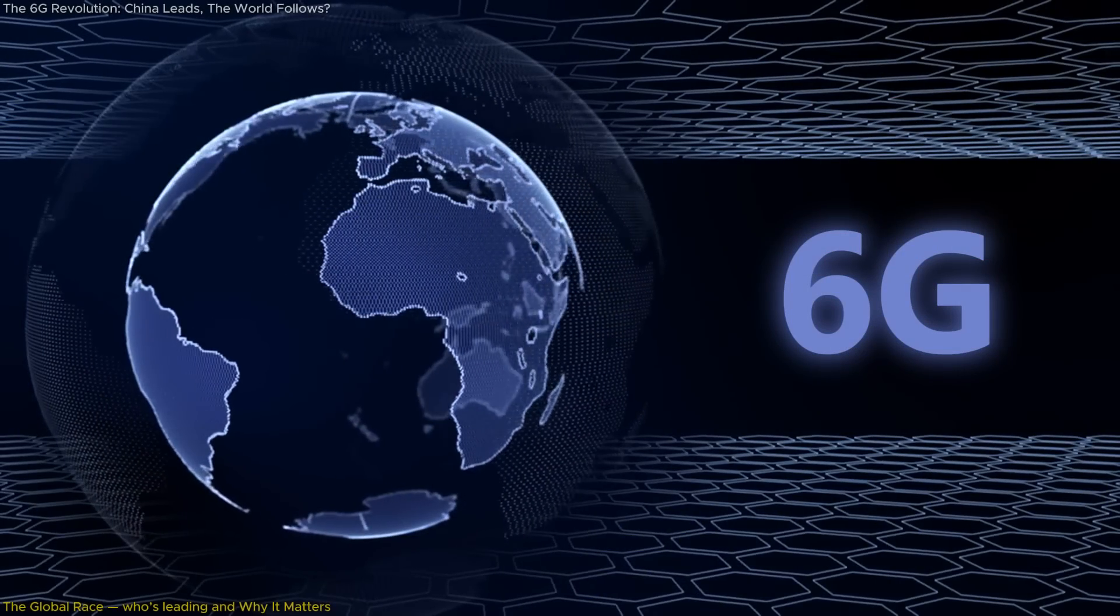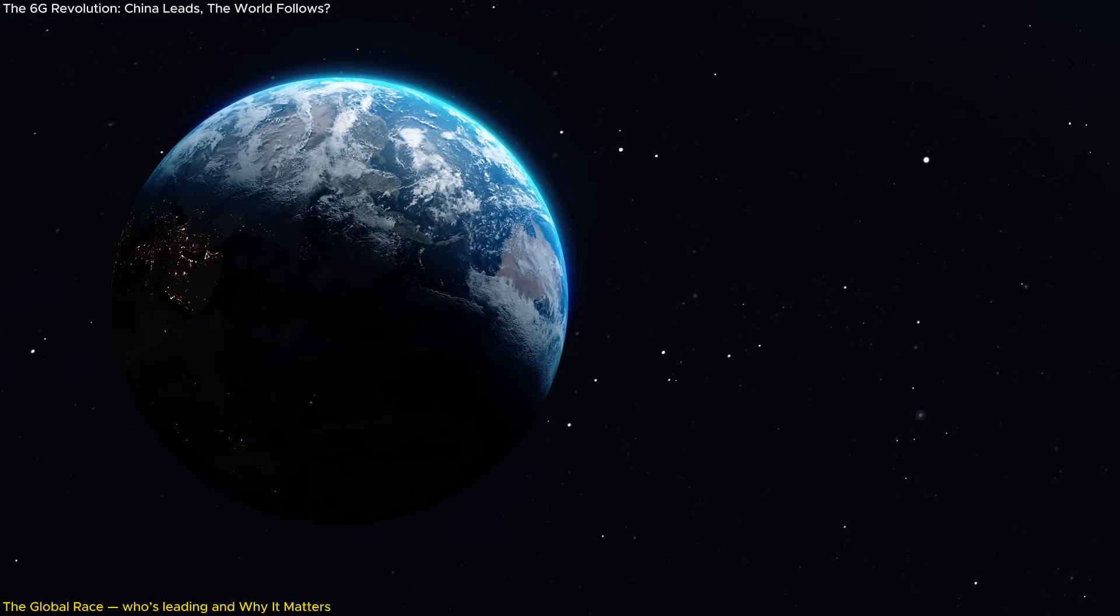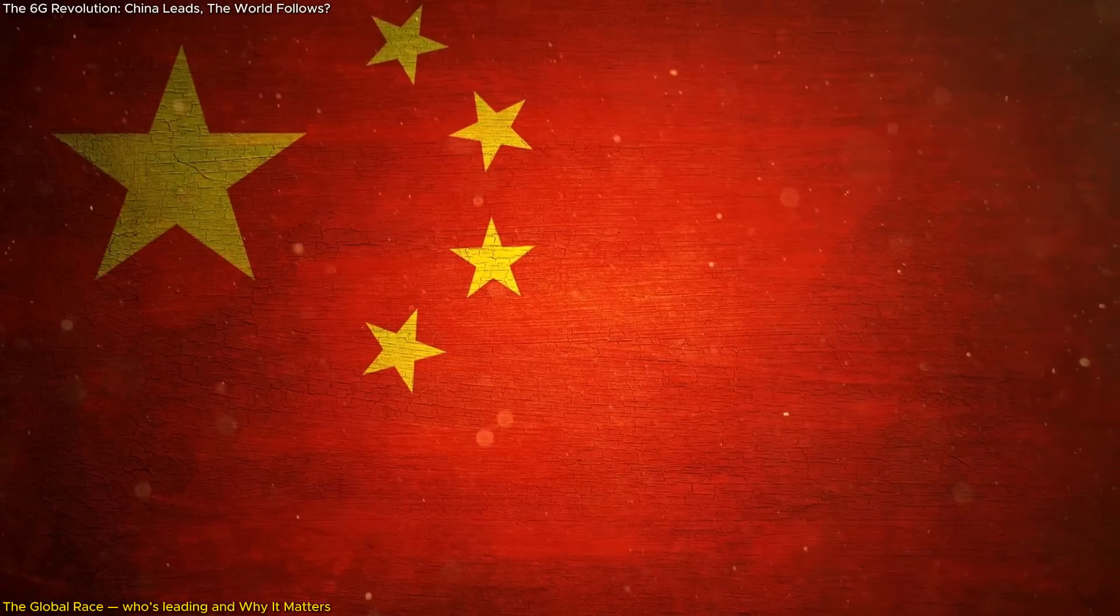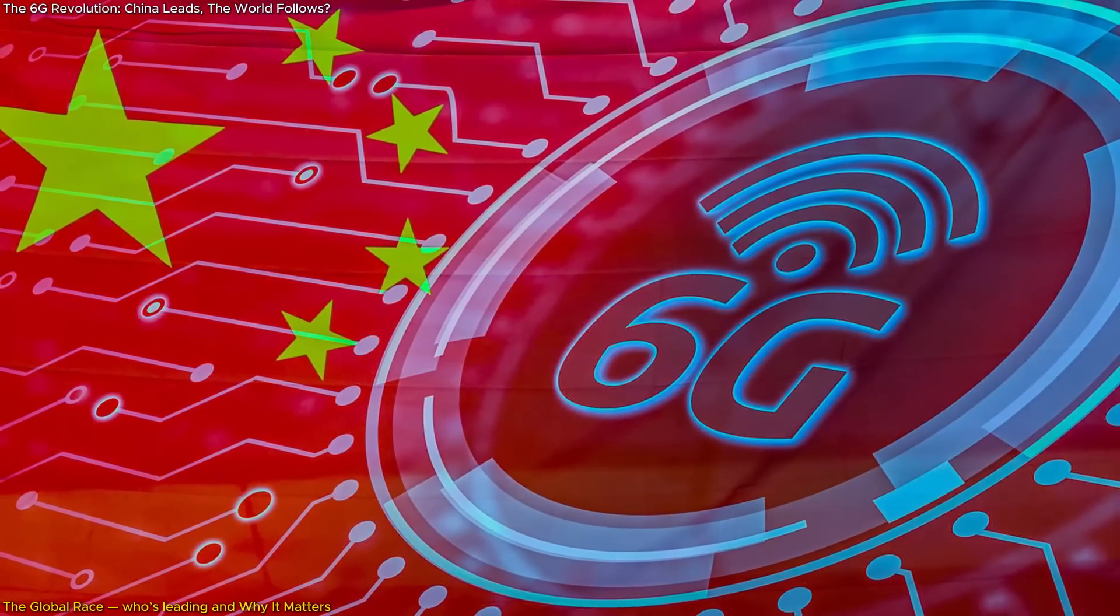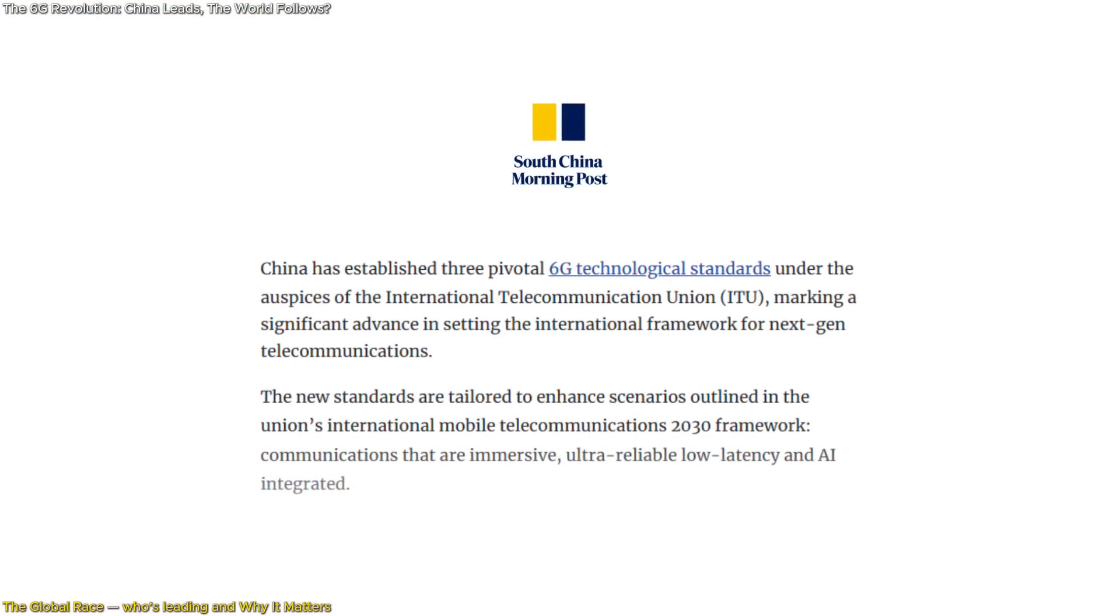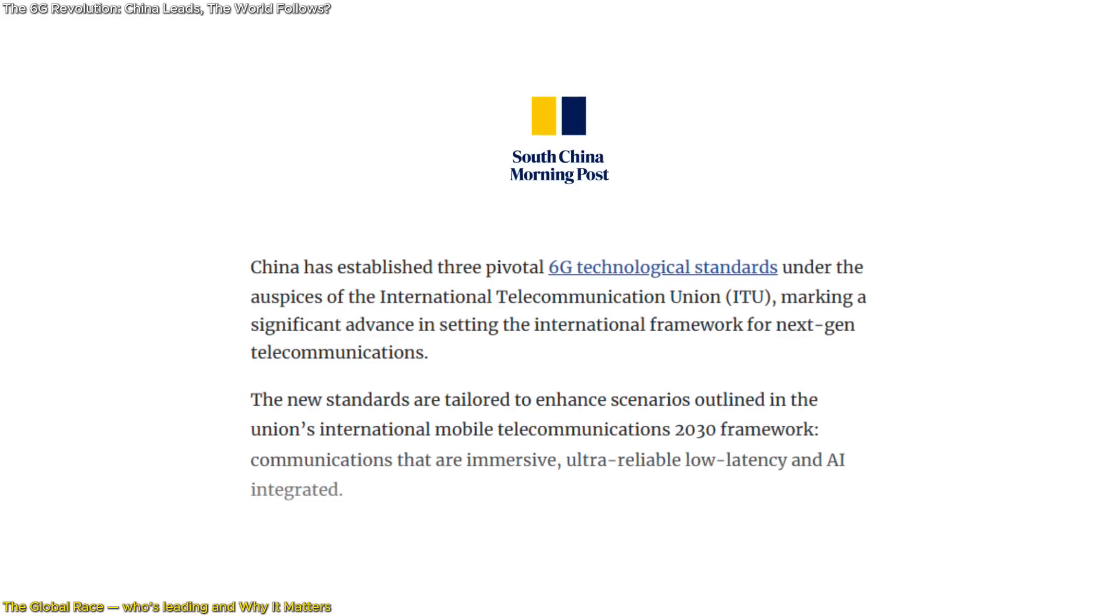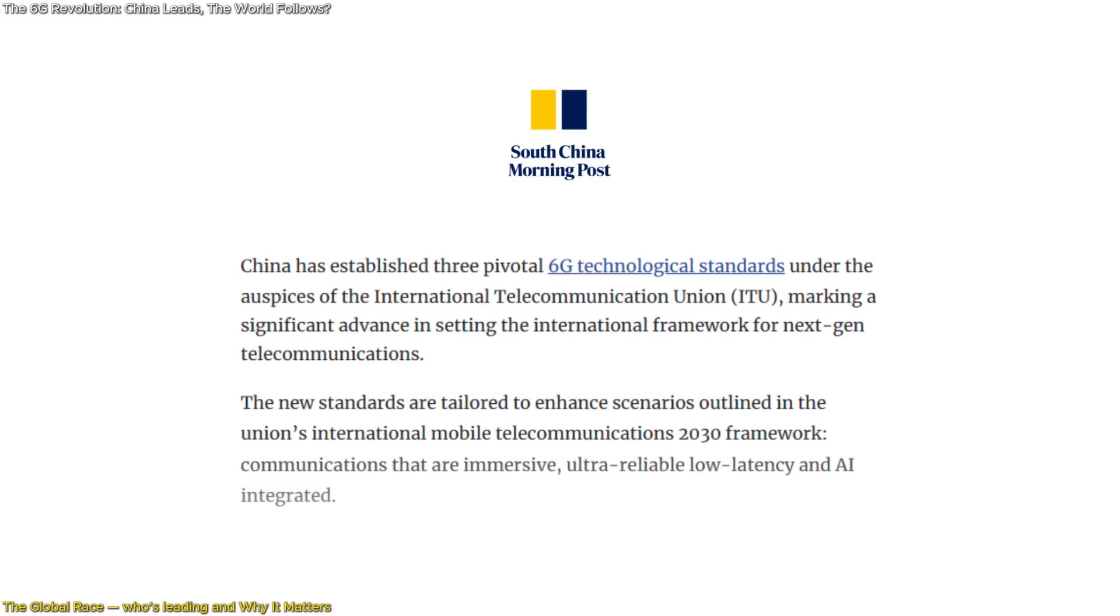The development of 6G isn't just a technological competition, it's a race for global influence, economic control, and national security. Leading the way is China, which has made 6G a formal part of its national development strategy. In 2024, China successfully established three 6G technical standards under the International Telecommunication Union (ITU), and is currently leading in 6G patents and research publications.